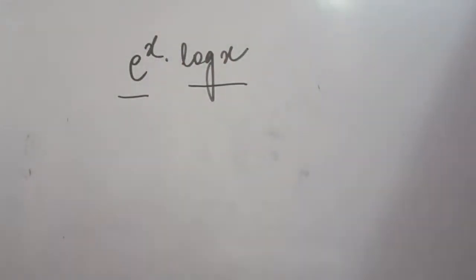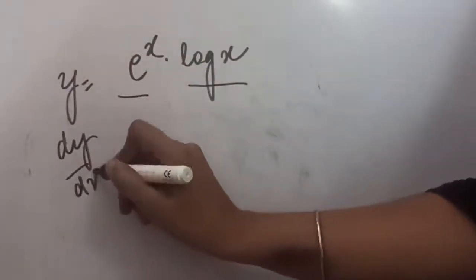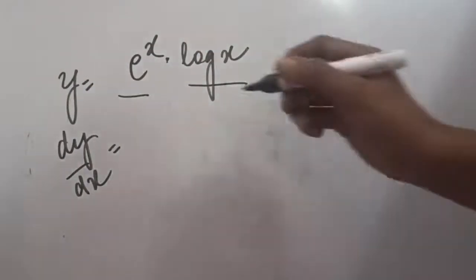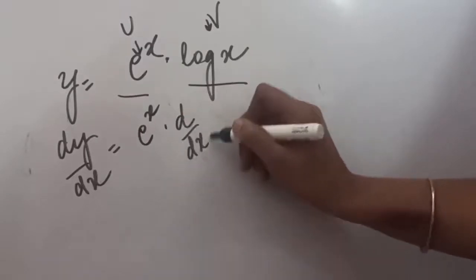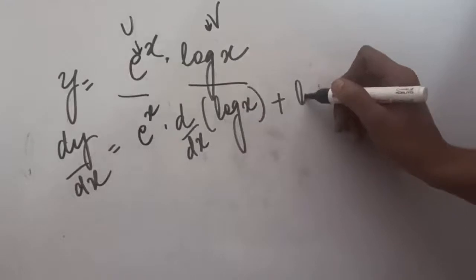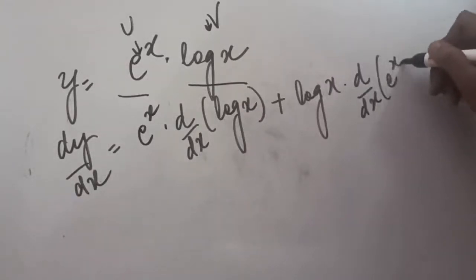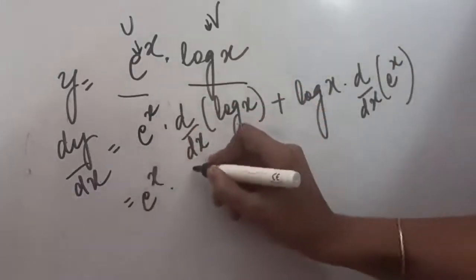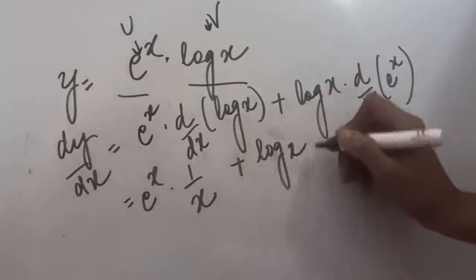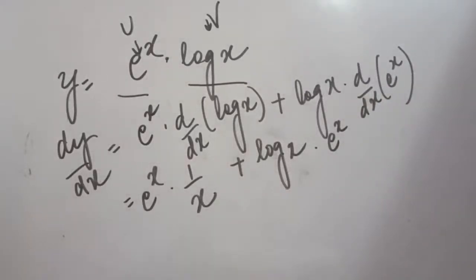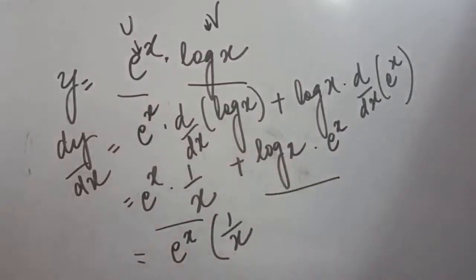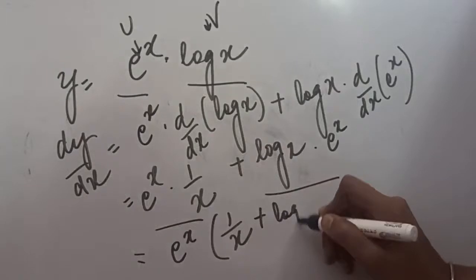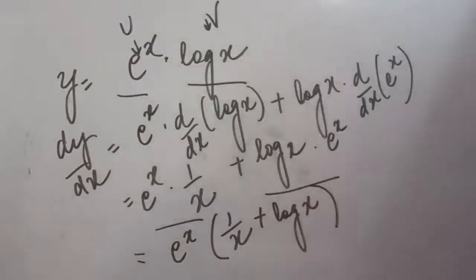Another question has two functions: u = eˣ and v = log x. To take the differentiation, since it is a multiplication, we apply the product rule. Writing it as: eˣ times d/dx(log x), plus log x times d/dx(eˣ). The derivative of log x is 1/x, and the derivative of eˣ is eˣ. So we get eˣ/x + eˣ·log x. Since eˣ is common on both terms, taking it out gives eˣ(1/x + log x).